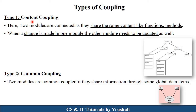The first type of coupling is content coupling. Here, module one, module two, and module three all share the same functions and methods. When you make a change in one module, it affects another module. This is called content coupling — they share the same functions and methods with each other.